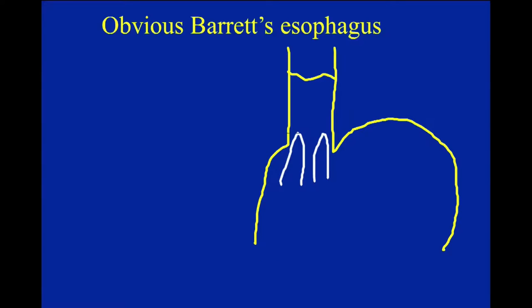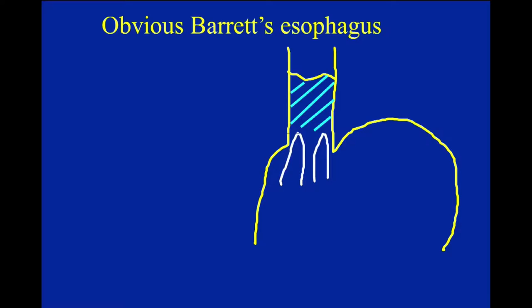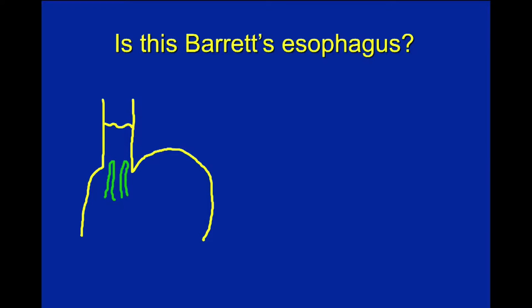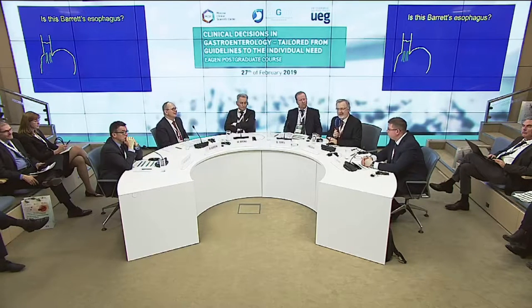This is the example and schema of obvious Barrett's esophagus when you see a long distance between the upper limit of gastric folds and the squamous columnar junction. This is clearly visible, and if we find it, we can obviously be sure that we have Barrett's esophagus — and on endoscopy it usually looks like that.